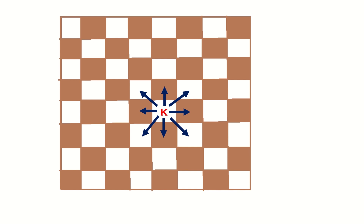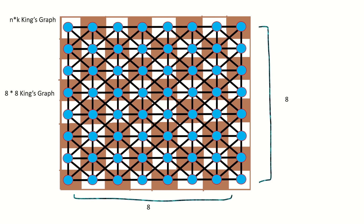We are familiar with the 8×8 chessboard, and the legal moves of a king on this chessboard would be captured by an 8×8 king's graph. However, king's graphs can have different dimensions as well, such as 3×5, 6×7 — any pair of positive whole numbers really.